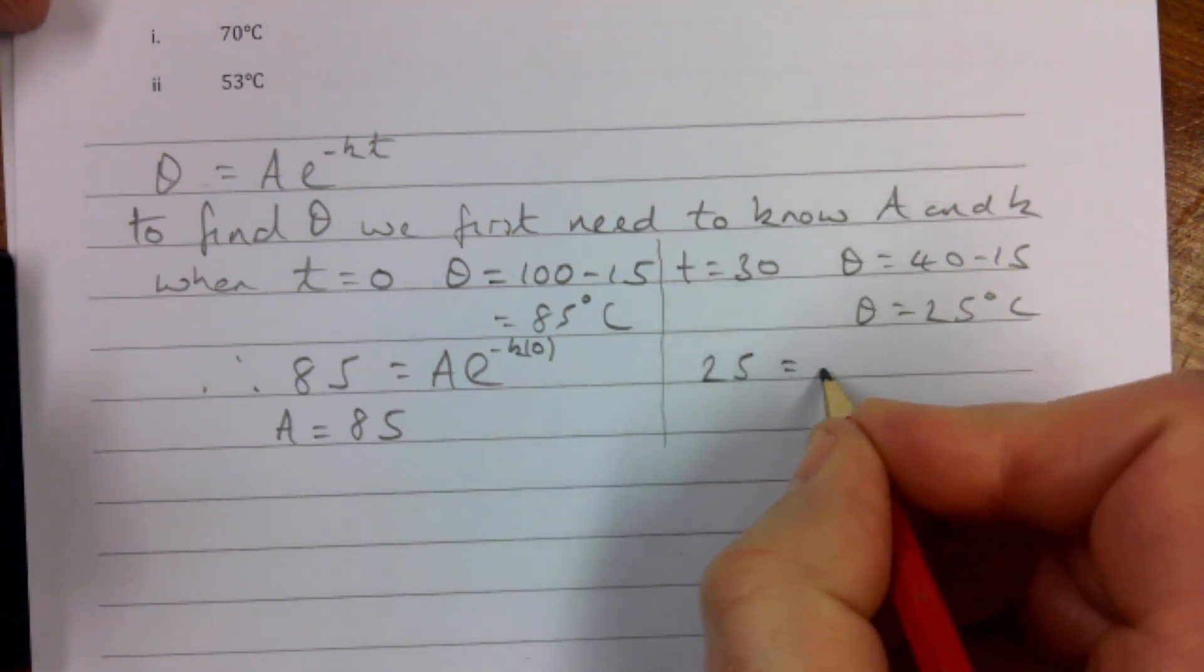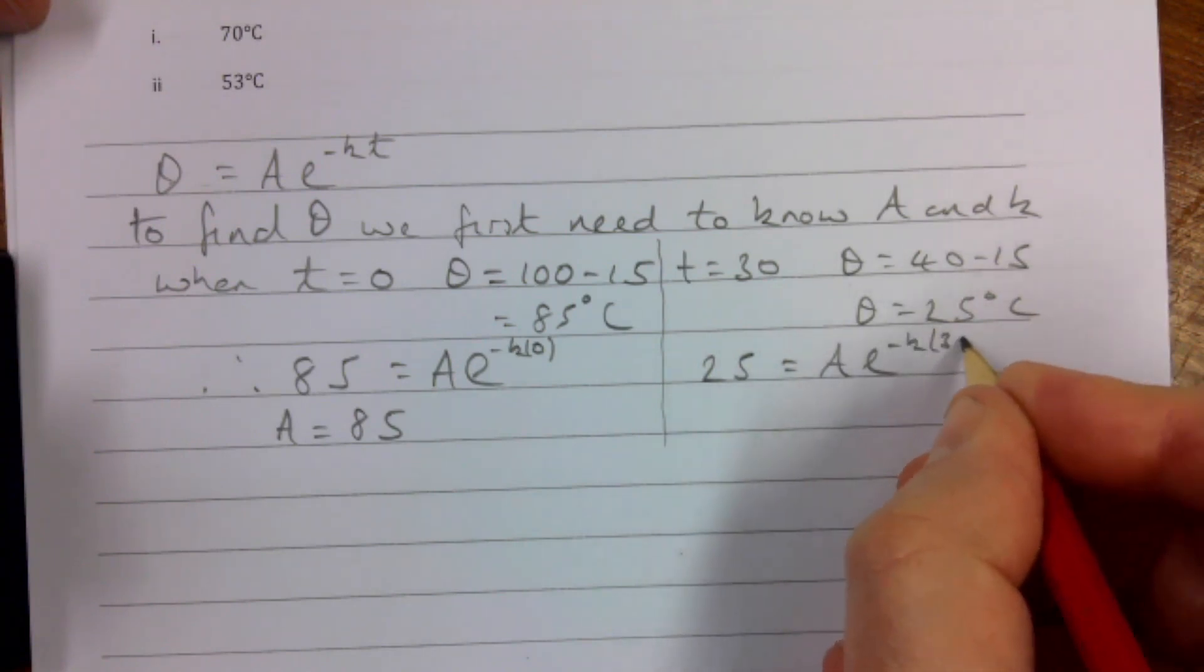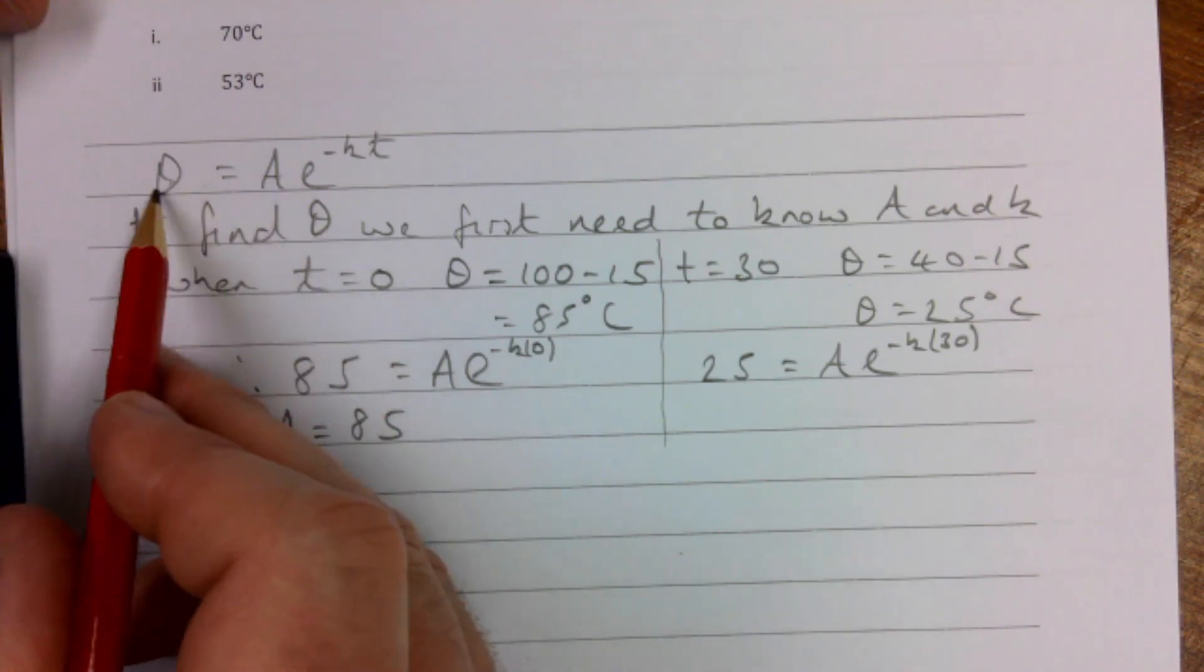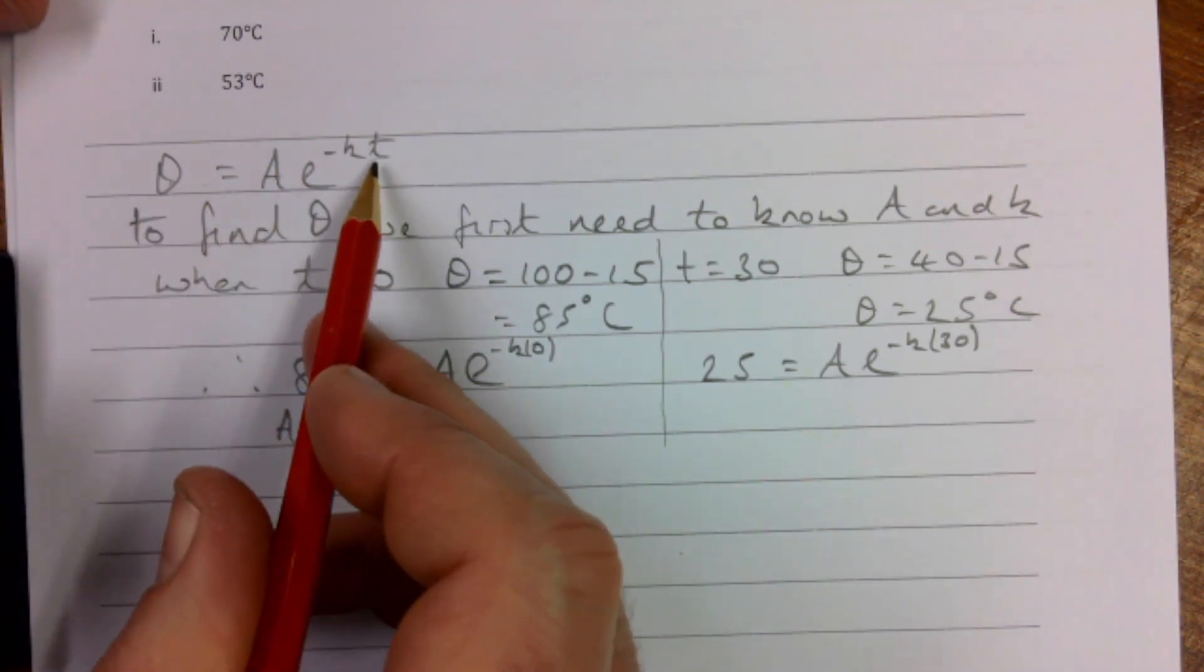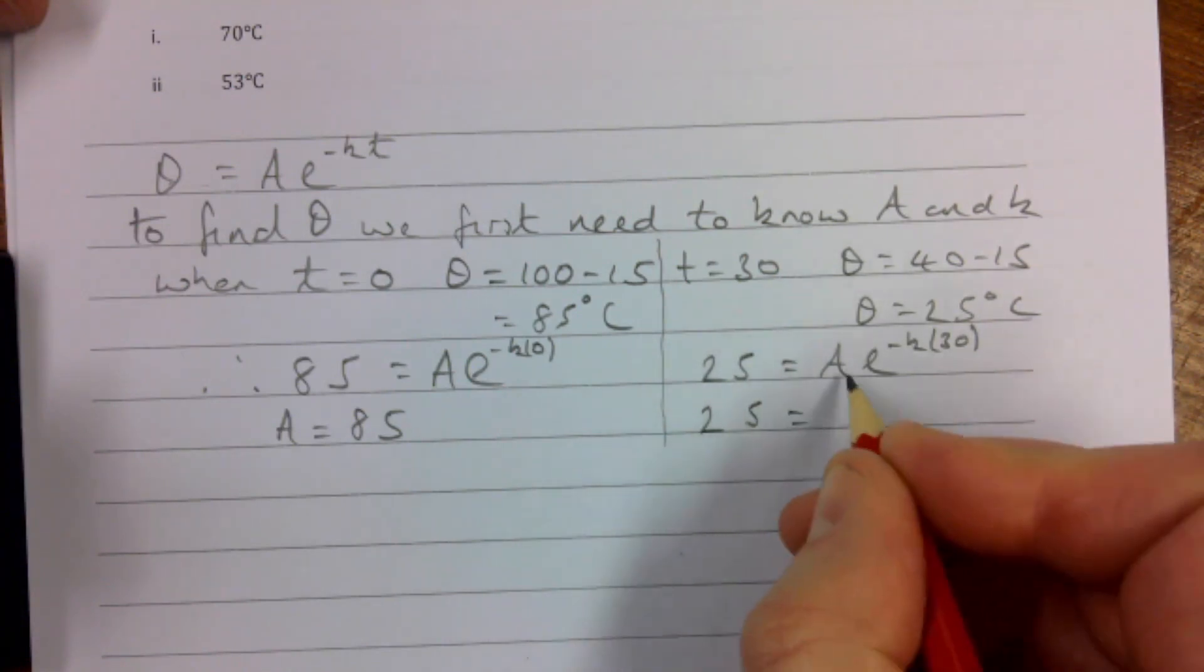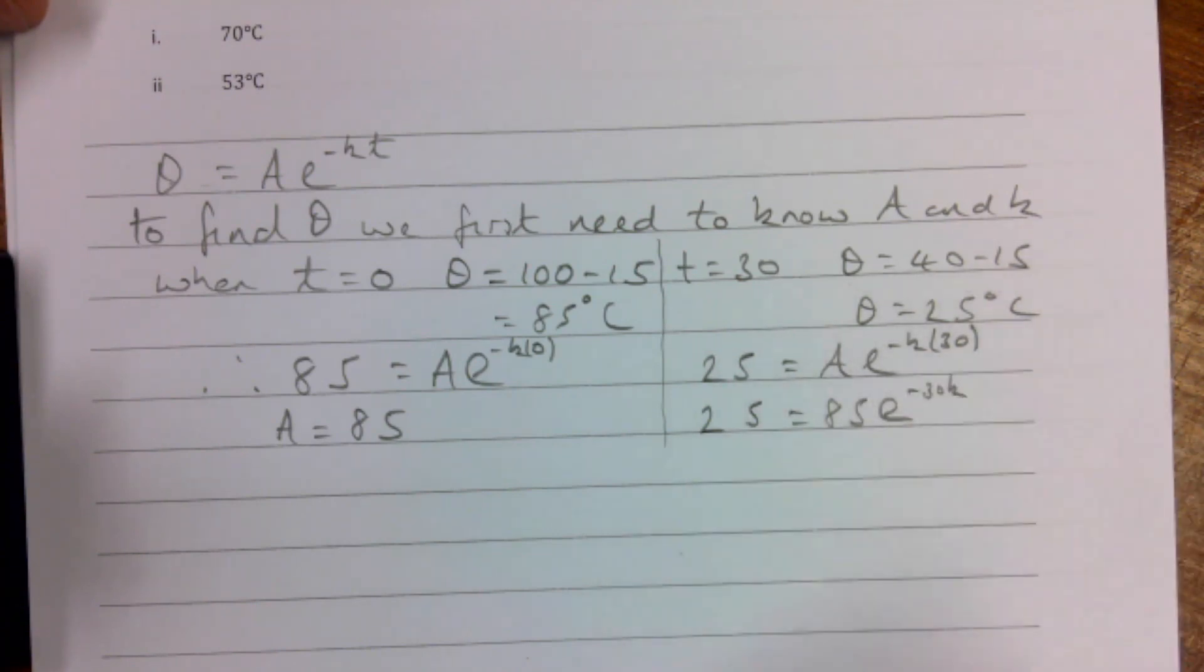25 = Ae^(-k·30). Again, do you see what I've done? I've taken this formula and I've subbed in my 25 and I've subbed in my 30 minutes. So I also know that 25 = 85·e^(-30k).